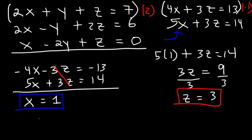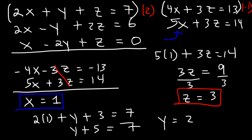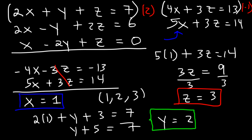Now we need to find the value of y. Using the original first equation with x equals 1 and z equals 3: 2(1) plus y plus 3 equals 7. Combining like terms, 2 plus 3 is 5, so y plus 5 equals 7. Subtracting 5 from both sides gives y equals 2. So the answer is (1, 2, 3) for x, y, and z.